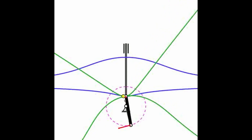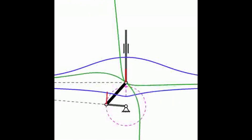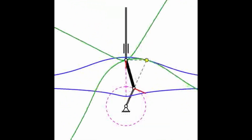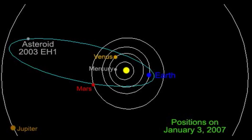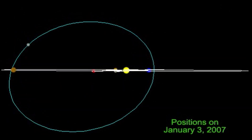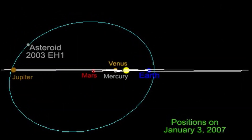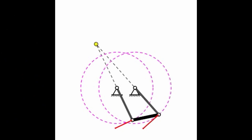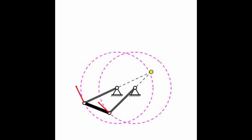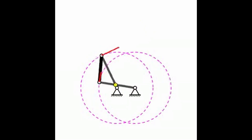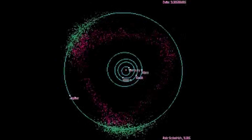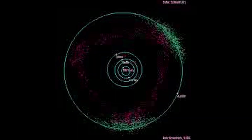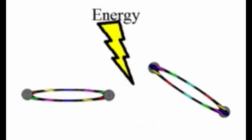Mirror symmetry exemplifies the power of equivalence: it establishes an exact correspondence between two distinct physical systems residing in different realms — symplectic geometry and algebraic geometry. Mirror symmetry relates the physics of string theory on two different Calabi-Yau manifolds: if X and Y are Calabi-Yau manifolds forming a mirror pair, their complexified Kähler structures and moduli spaces match, and their Hodge numbers are related by h^{1,1}(X) = h^{n-1,1}(Y) and vice versa. Mirror symmetry provides a powerful tool for understanding complex systems, revealing unexpected connections that enrich both physics and mathematics.